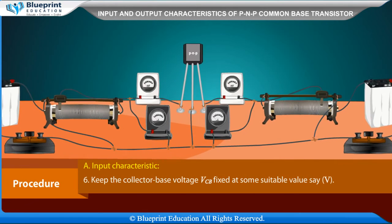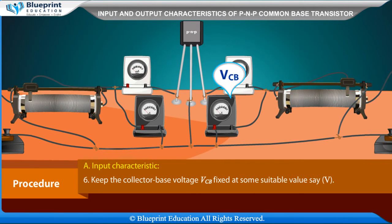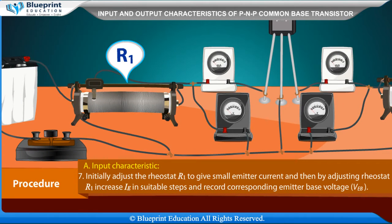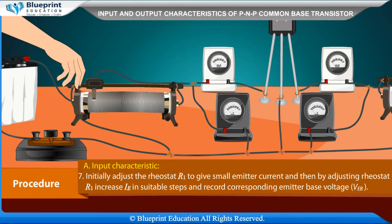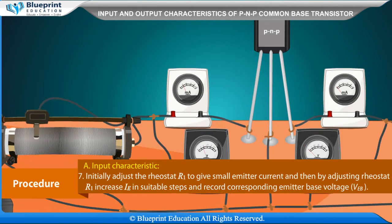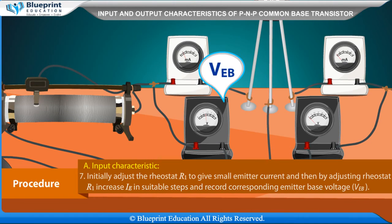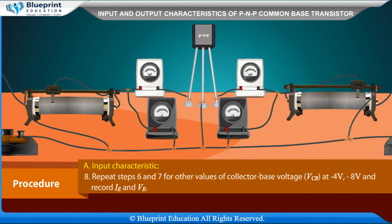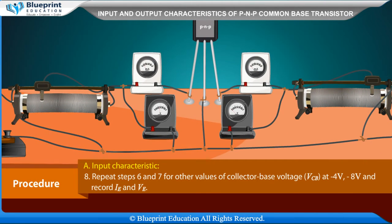Input Characteristics: Keep the collector-base voltage VCB fixed at a suitable value. Initially adjust rheostat R1 to give small emitter current, then by adjusting R1 increase IE in suitable steps and record the corresponding emitter-base voltage VEB. Repeat for other values of VCB at minus 4 V and minus 8 V, and record IE and VEB.